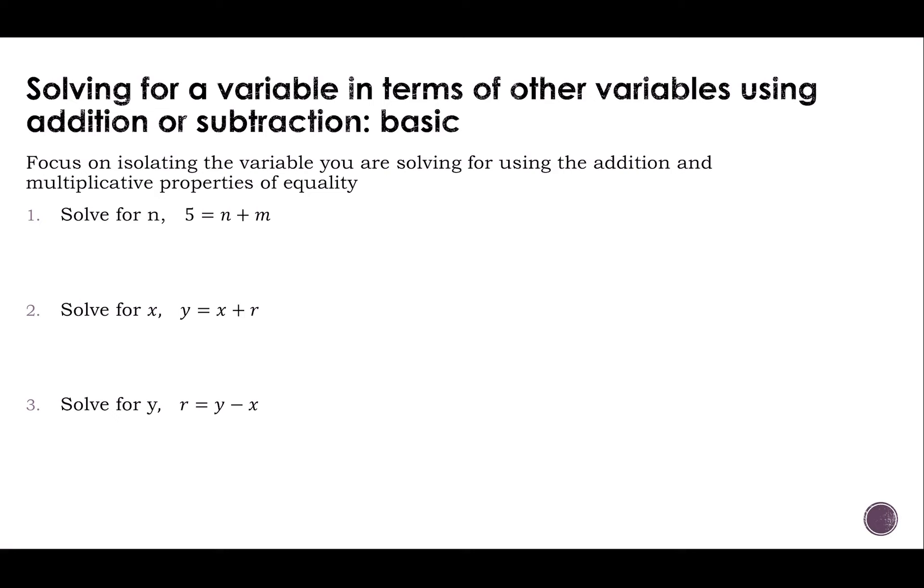Let's look at number 1. Here it says solve for n, so I have 5 equals n plus m. What I want to do is get that n all by itself. So I'm going to subtract m, so my m's cancel, but I need to do that to both sides because what I do to one side, I have to do to both. This is an equation. We have to keep it balanced. So I find that 5 minus m equals n.